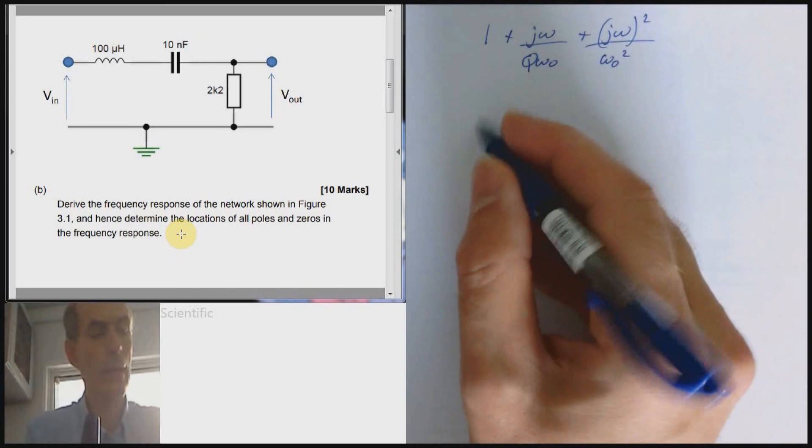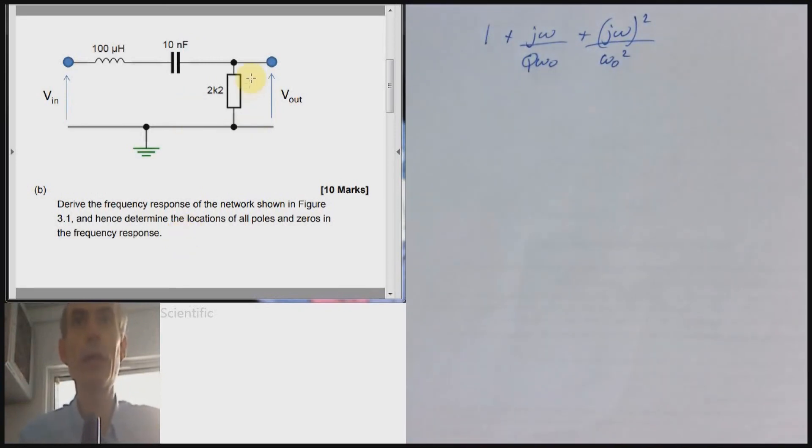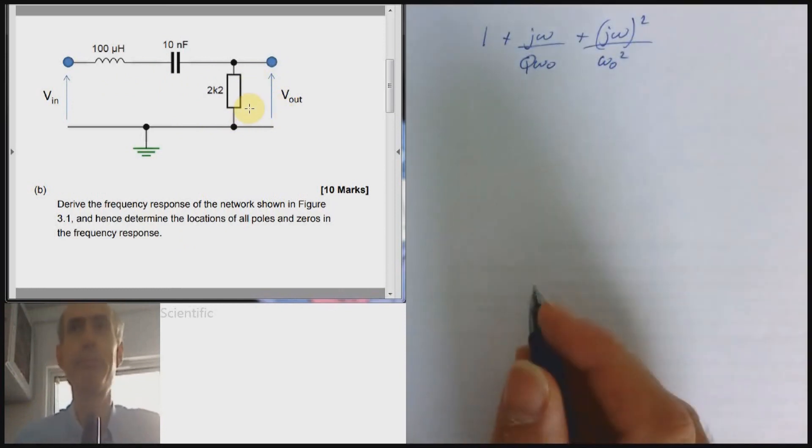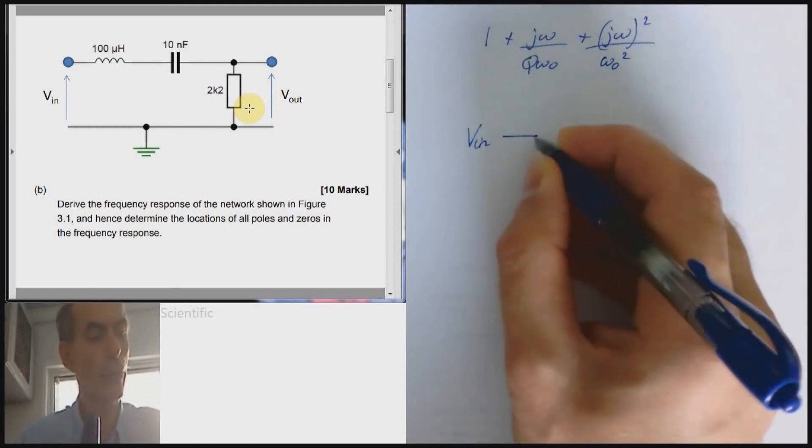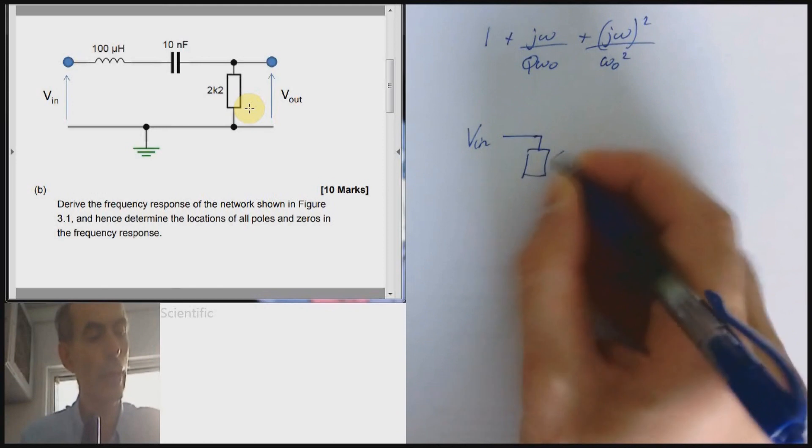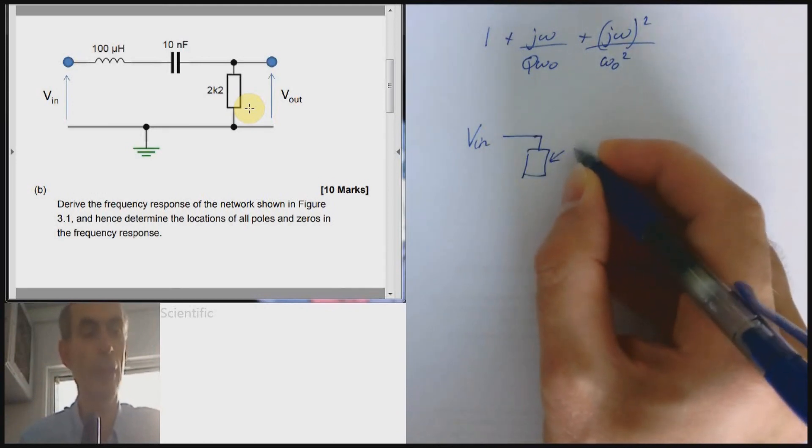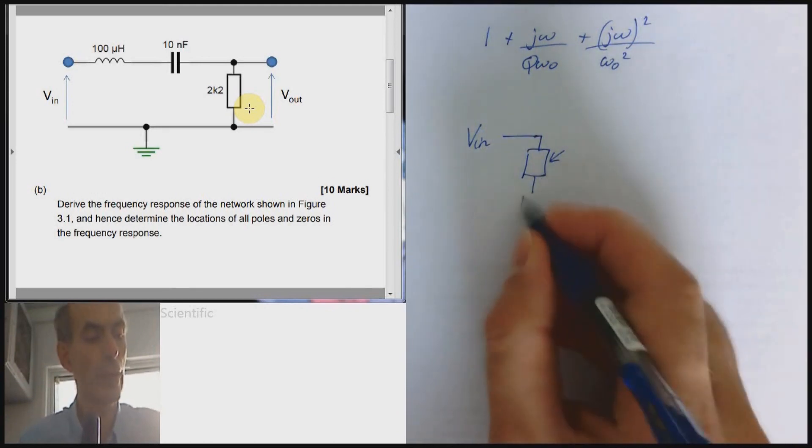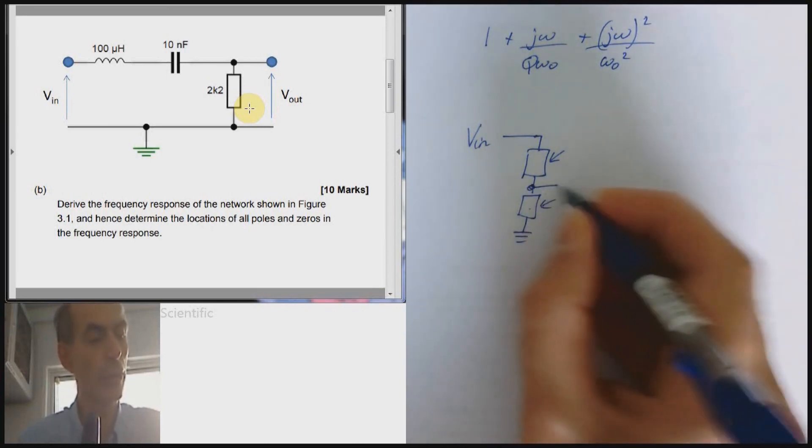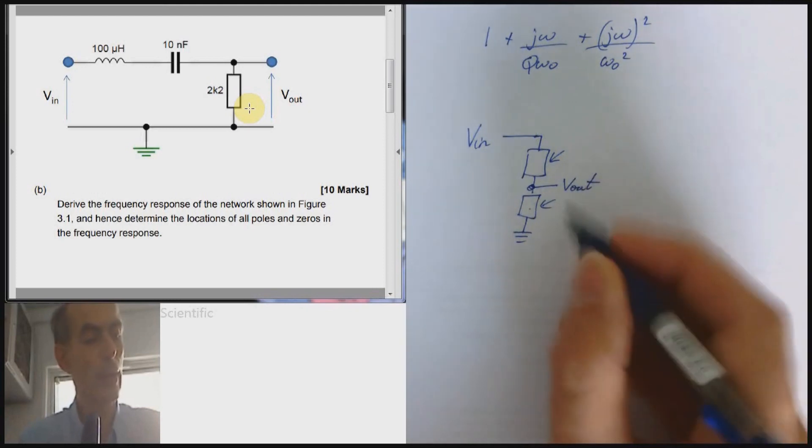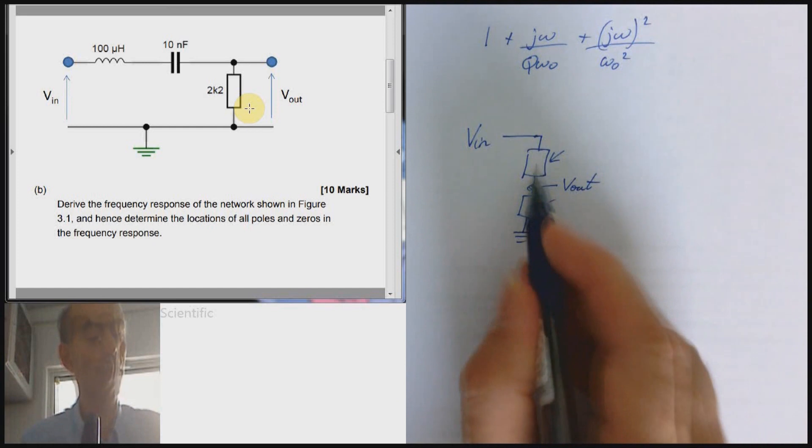Here we have an inductor, a capacitor and a resistor in series with the output being taken across the resistor. It's a potential divider. Again, we have the V in here. We have a network there, which actually is composed of the inductor and the capacitor in series. We have a network down here, which is just the resistor. And the output is being taken across that point there, down to ground.